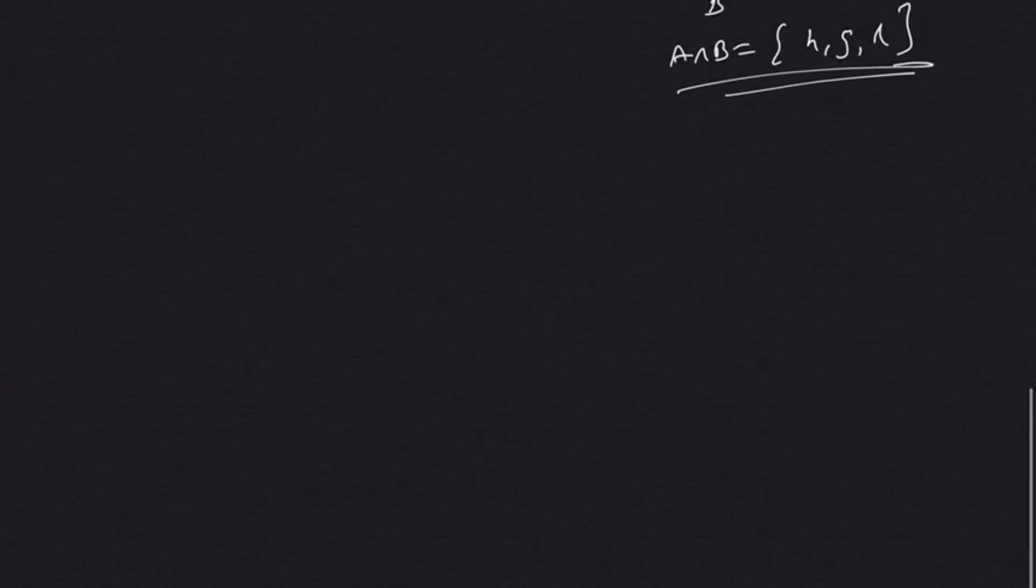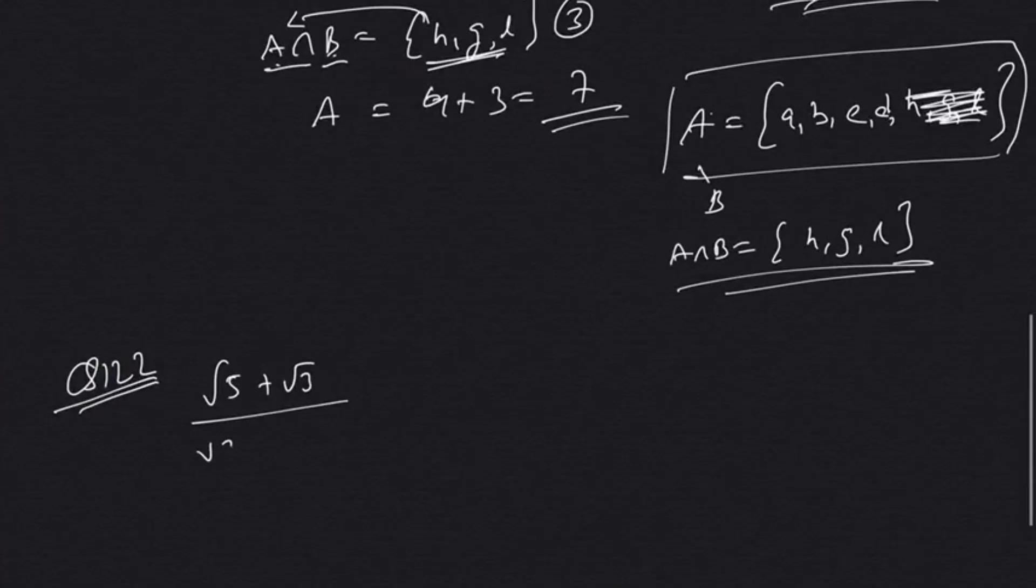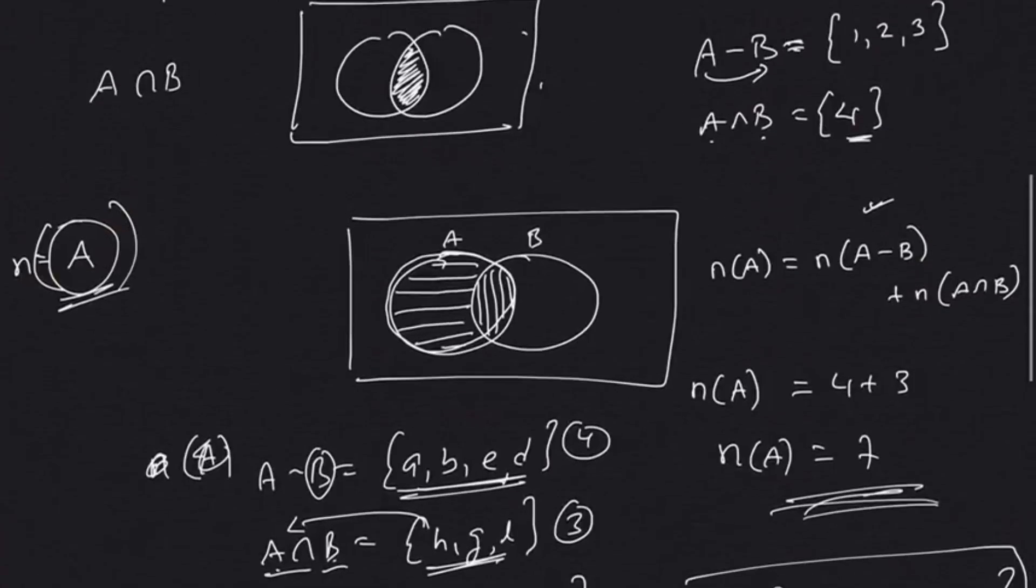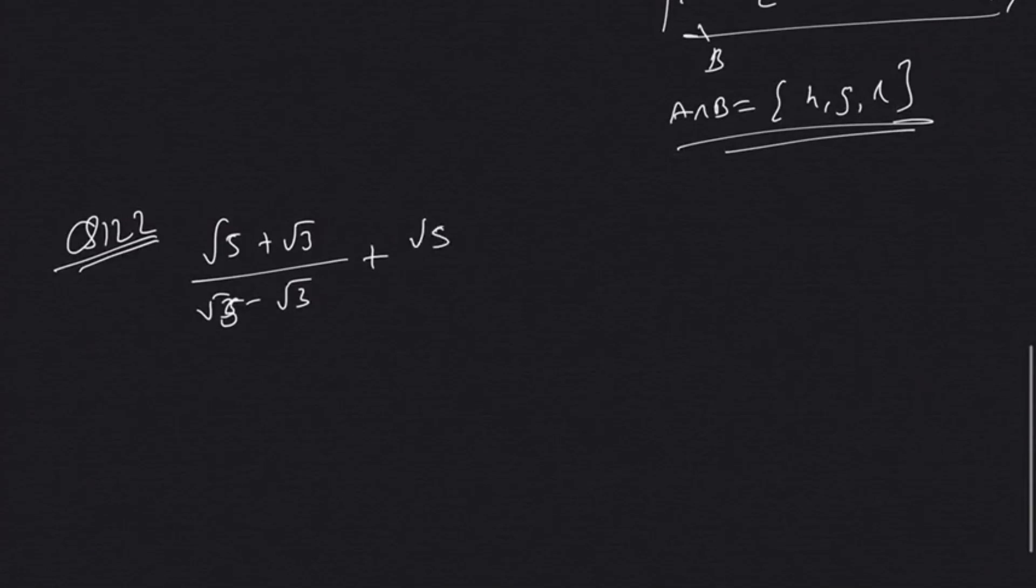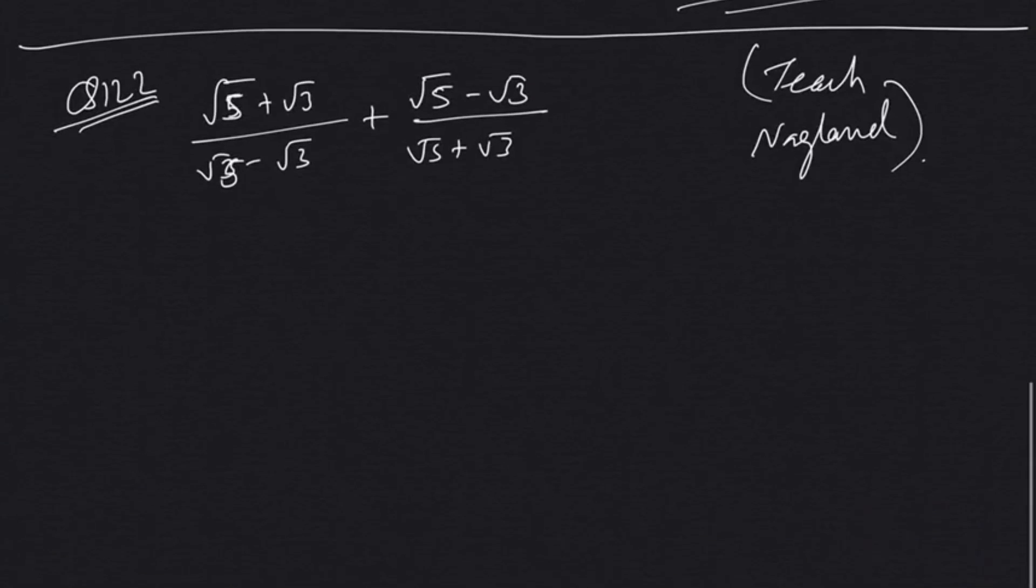Question number 122. That will be (√5 + √3)/(√5 - √3) + (√5 - √3)/(√5 + √3). Now this is a question from class 9. Again I repeat, for any students who are aspiring to give NPSC examinations, class 6, 7, 8, 9, 10 mathematics textbooks - if you can do at least the basic concepts, it's going to be really helpful.